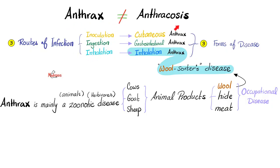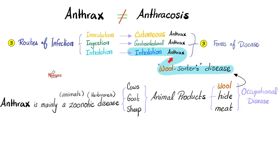Three routes of infection, three forms of the disease. Anthrax is mainly a zoonosis — a disease that mainly infects animals, and then animals can infect humans. What kind of animals? Cows, goats, and sheep. So exposure to animals or animal products can lead to anthrax, especially wool. That's why we have wool sorter's disease, which is nothing but inhalation anthrax.